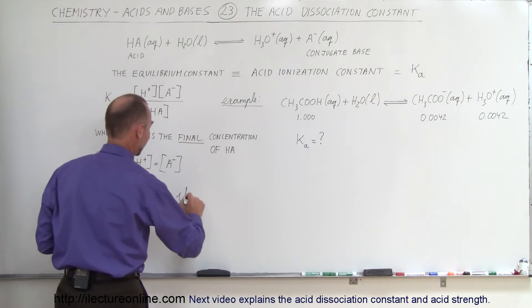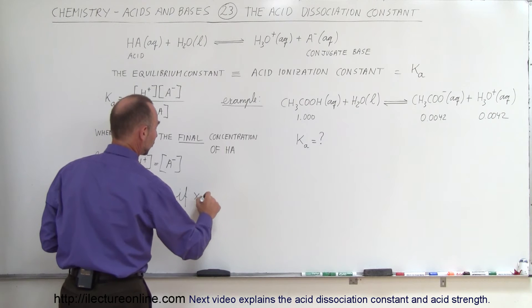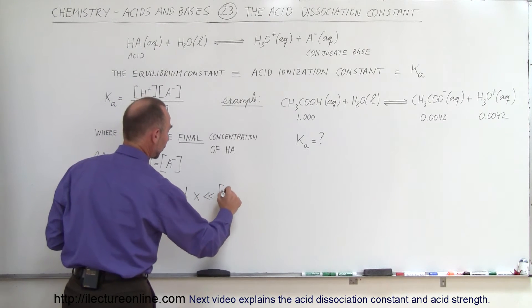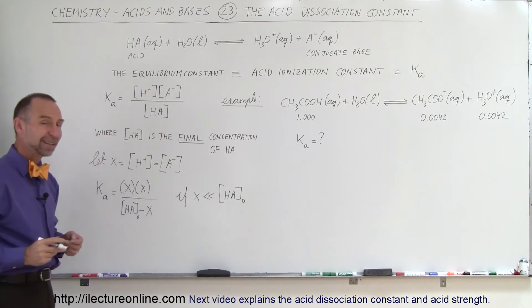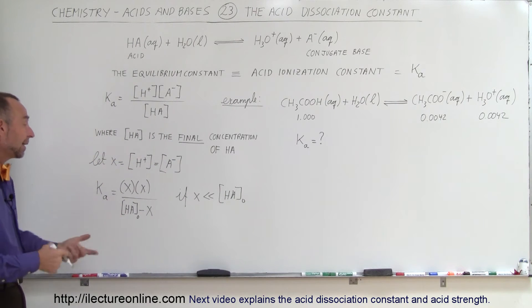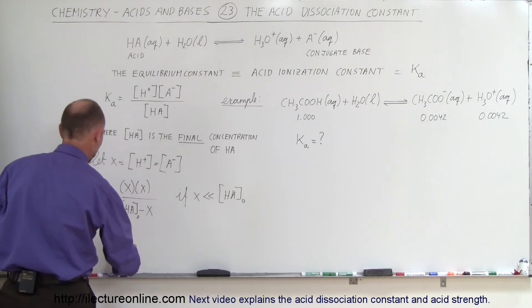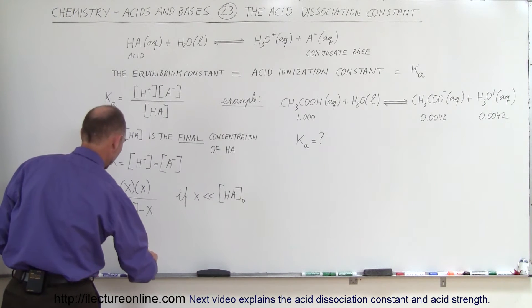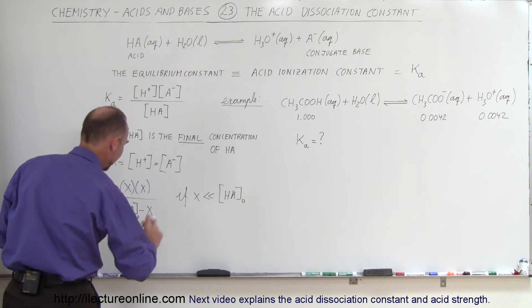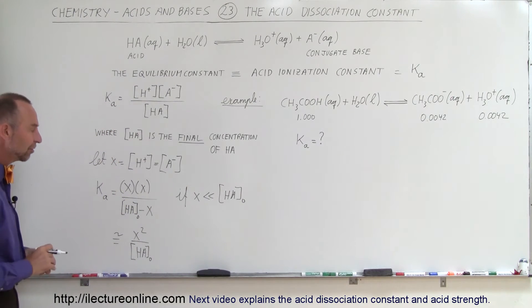For example, if X is much, much smaller than the original concentration of your acid, molarity of acid, then you can kind of ignore that, and then you say that this will be approximately equal to X squared divided by the original concentration of your acid. That makes it very simple.